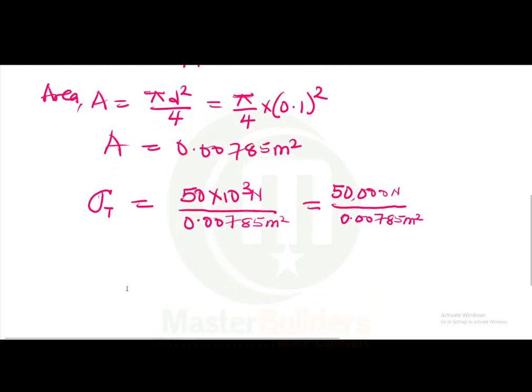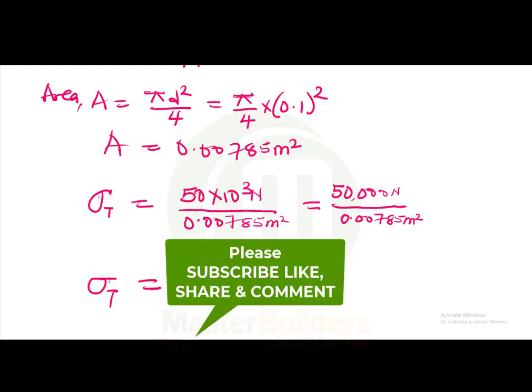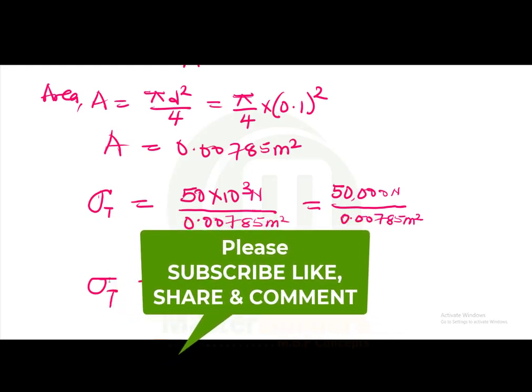Now if we divide 50,000 by 0.00785, the tensile stress will be equal to 6.4 multiplied by 10 raised to the power of 6 newtons per meter squared.